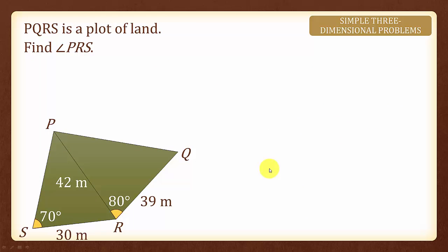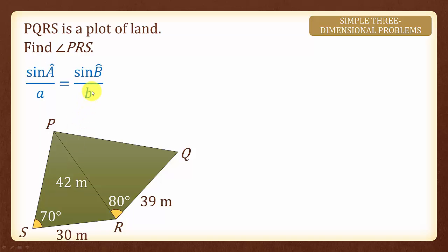Next, we shall look at another type of three-dimensional problem. PQRS below is a plot of land and we are asked to find angle PRS. We notice that we have a given angle and its opposite length, and therefore we can use the sine rule.